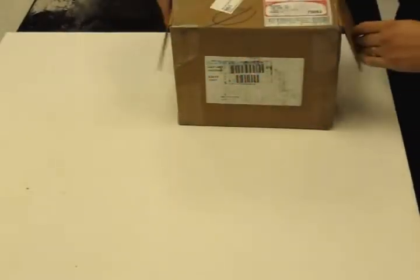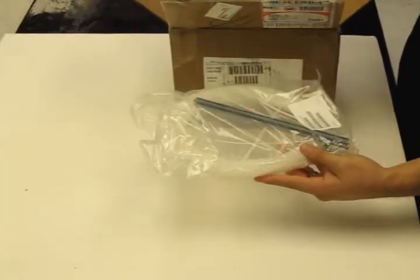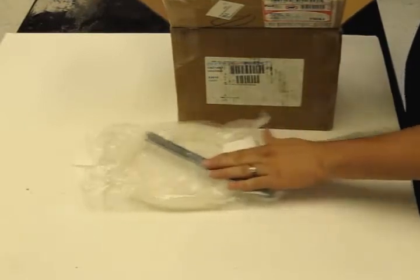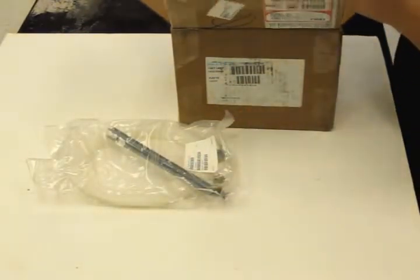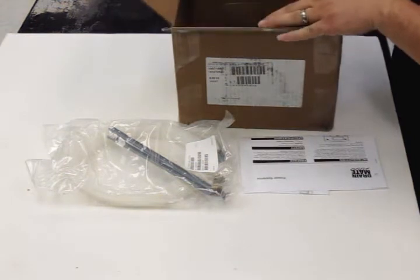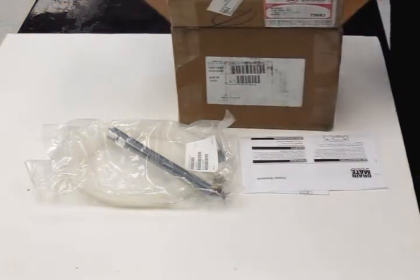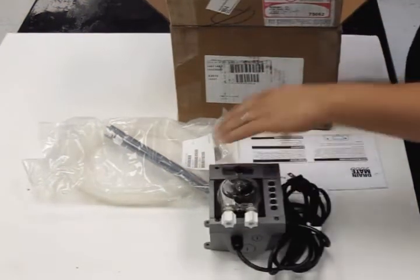Here we have the Drainmate 2000. Along with your box comes an installation kit that includes mounting hardware, hoses, manuals, and your Drainmate.